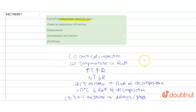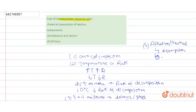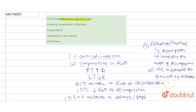The fourth factor is soil pH. If the pH of the soil is alkaline, it enhances the growth of various decomposer microbes, which increases the rate of decomposition. But if the soil is acidic, it decreases the growth of decomposing microbes and delays the rate of decomposition.